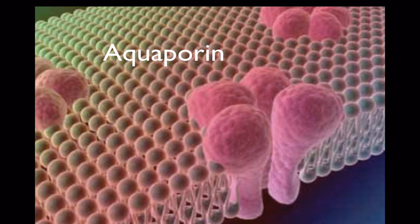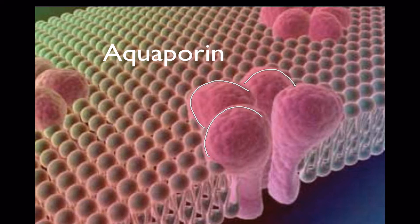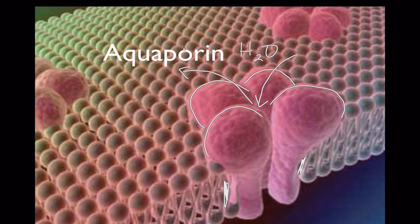Here's a computer-generated picture of what scientists believe aquaporins look like — a collection of embedded proteins stuck into the phospholipid bilayer. The ends that stick out are hydrophilic and attracted to water; the whole thing is anchored in the bilayer by nonpolar, hydrophobic regions. The net effect is a channel through which water molecules can enter and exit. Aquaporins are gateways for water molecules to flow into or out of a cell, and the more aquaporins a cell has, the faster water molecules will osmose in or out.